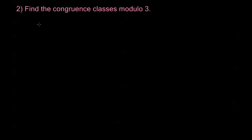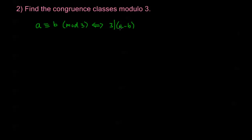Now the second question is going to deal with congruence. The question says: find the congruence classes modulo 3. Remember that a is congruent to b mod 3 if and only if 3 is a divisor of the difference a minus b. The numbers in a class are those numbers which have the same remainder when divided by 3 — meaning a minus b has remainder 0. So the equivalence class [a] is going to equal all of the numbers a plus 3k for some integer k.